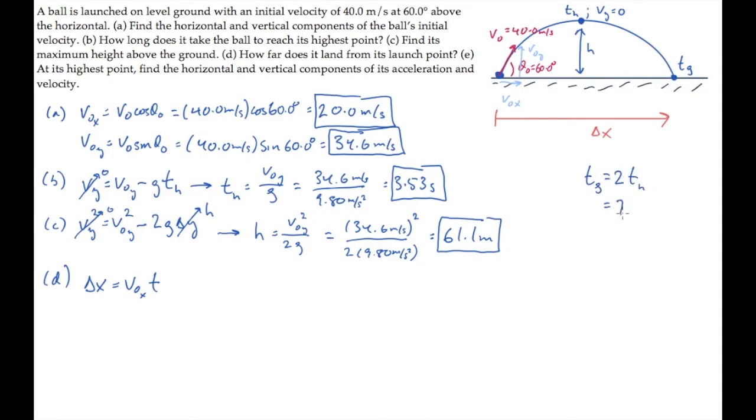We calculate and find that's 2 times 3.53 seconds, which is 7.06 seconds. And now we can multiply V naught X by that time to see that the ball travels 141 meters sideways before reaching the ground.